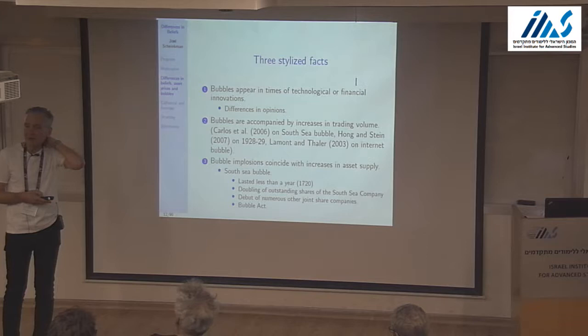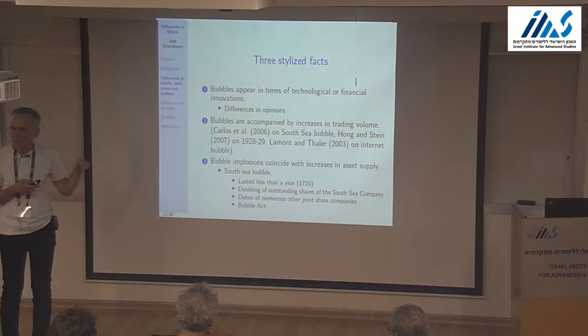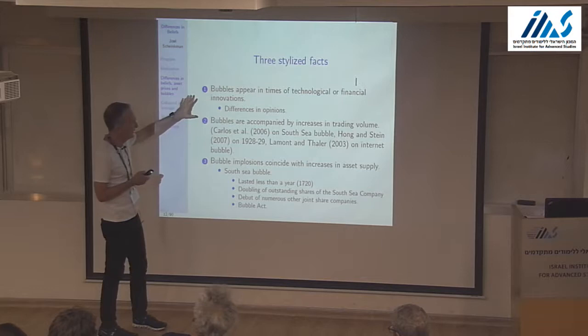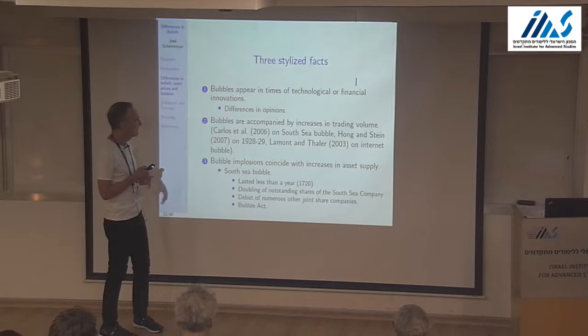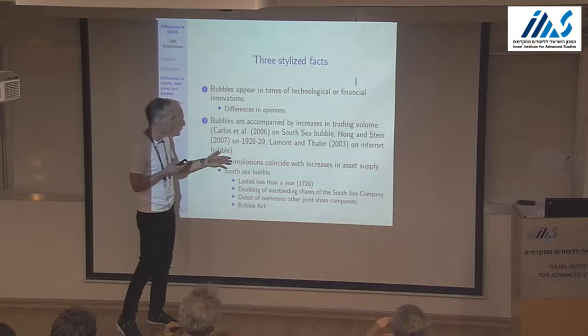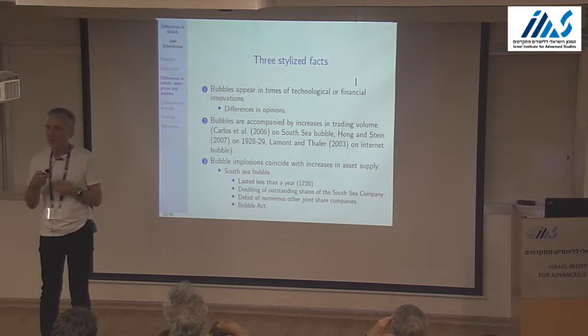With Harrison Hong and Wei Xiong we have a paper on the subject, but it's quite orthogonal to the stuff we're doing here. There's a lot of empirical evidence for pure bubbles in terms of technological and financial innovations. The second stylized fact is the correlation between high prices and trading volume — there's a lot of evidence for that. The third is that bubble implosions coincide with increases in asset supply.